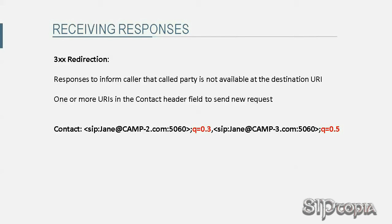There is a method to order the URIs that the caller may choose to use. The 3xx response contact header field could include a Q value with each URI indicating its priority. The higher the Q value, the more preferred the URI.